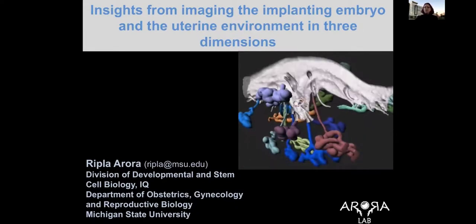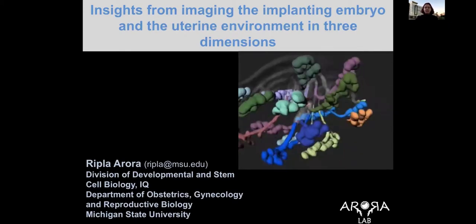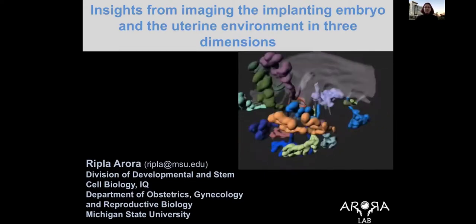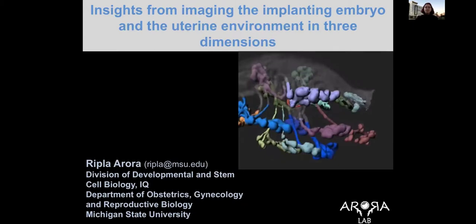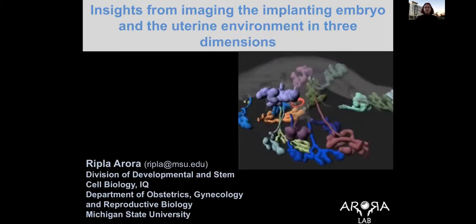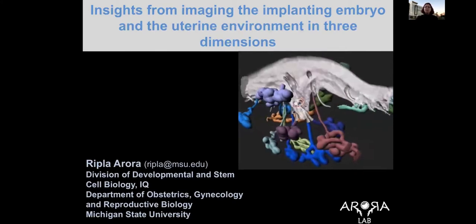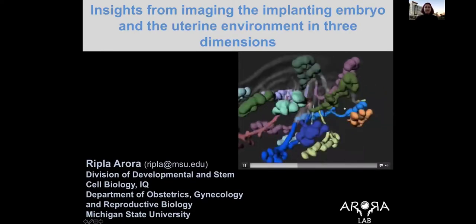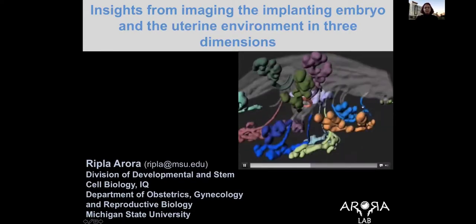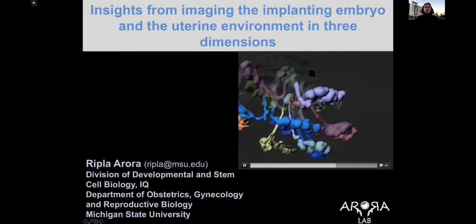Hello and welcome to this virtual presentation. Thanks to Andor for organizing this meeting and giving us a chance to connect as a community and share our science. My name is Ripa Arora and I'm a faculty at Michigan State University where I study early maternal fetal interactions using mouse as a model system. Today I will be telling you about the insights we have gained from imaging the implanting embryo, the red circular disc here or the blastocyst, and its immediate uterine environment. The gray structure is the uterine lumen that holds the embryo.